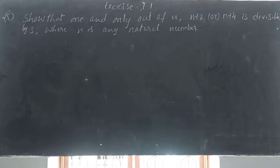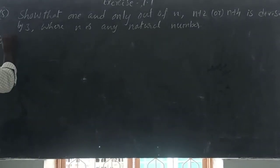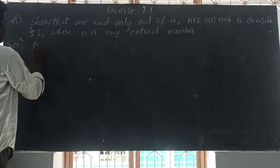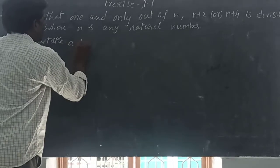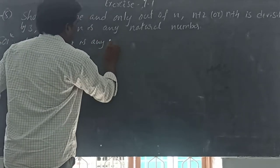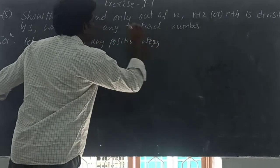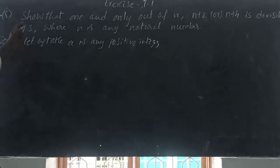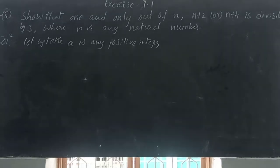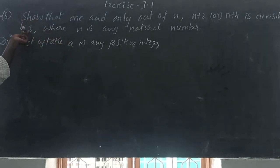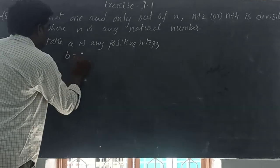How can you prove it? By using Euclid's Division Lemma. So let us take n as any positive integer. Here, show that one and only one of n, n plus 2, or n plus 4 is divisible by 3. That means here, what is the divisor? 3. So B is equal to 3. I am using Euclid's Division Lemma.